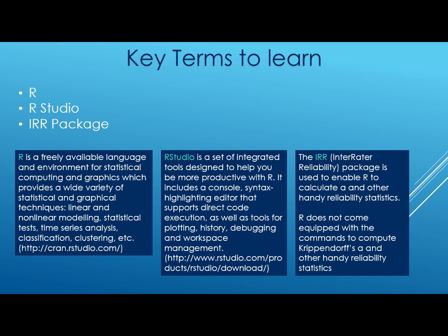If you want more information, you can go to rstudio.com. And then we have the IRR package, which is the inter-rater reliability package. Basically, this is used to enable R to calculate alpha and other inter-rater reliability statistics. R does not come equipped with the commands to compute Krippendorff's alpha and those other reliability statistics, so we need to install and load that package in order to do that.